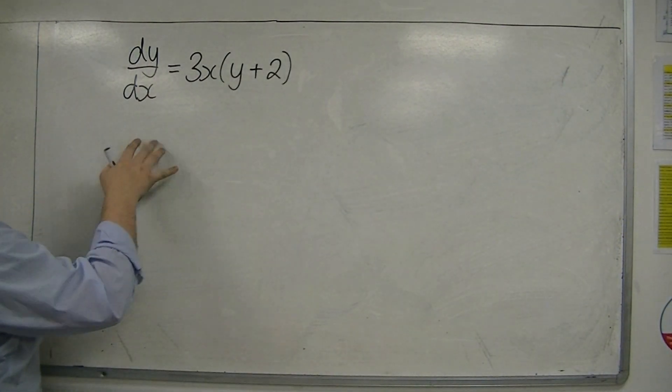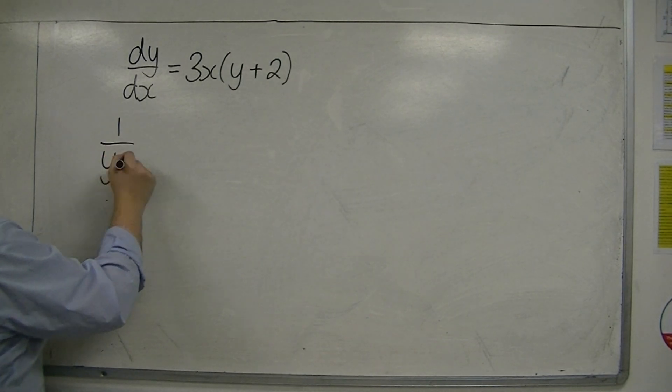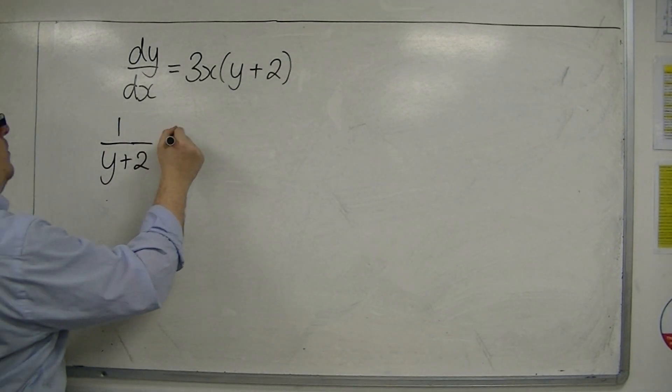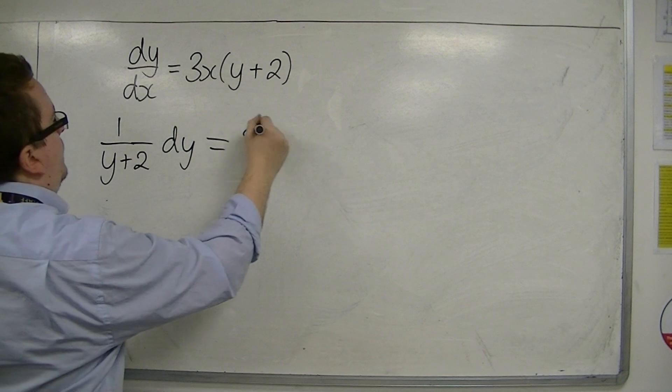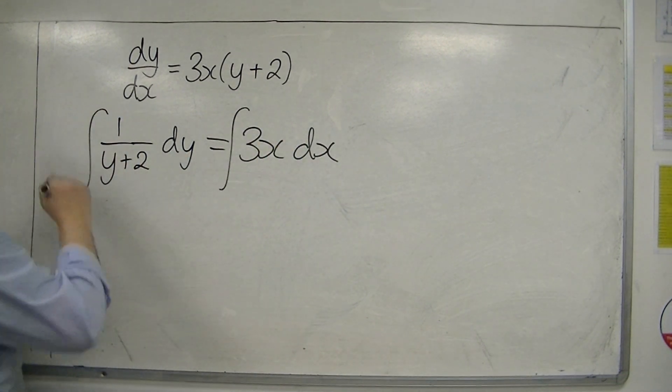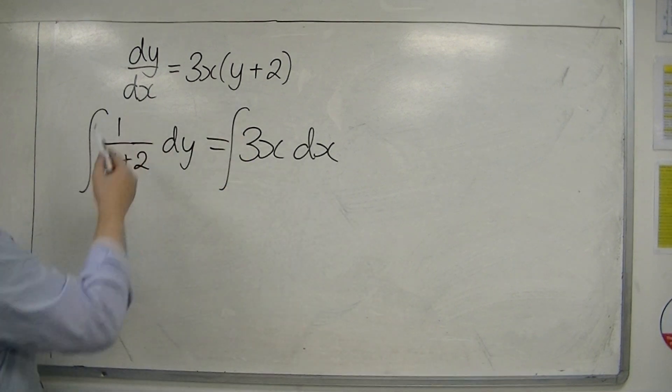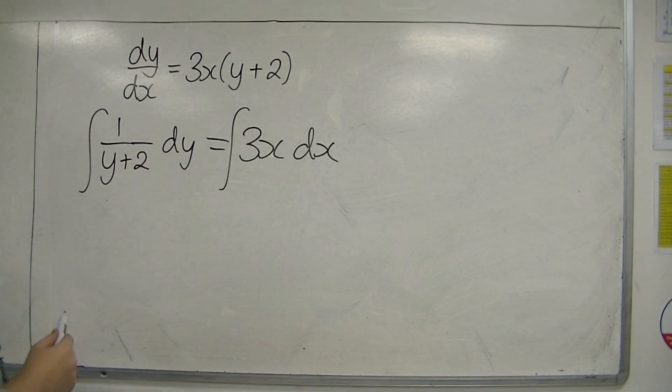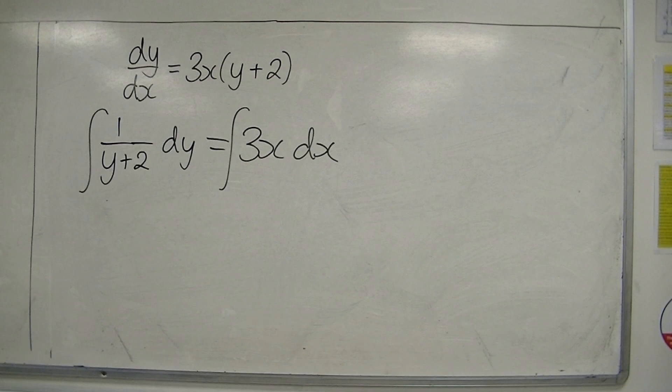So I'm going to divide through by y plus 2, and multiply through by dx. And then I integrate both sides. So I divide it through by y plus 2, multiply it through by dx, and I end up with this equation.